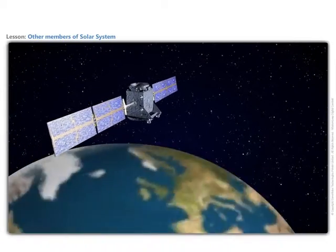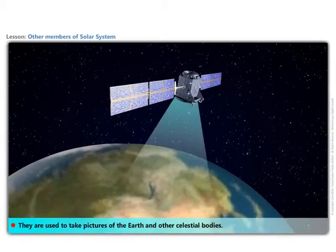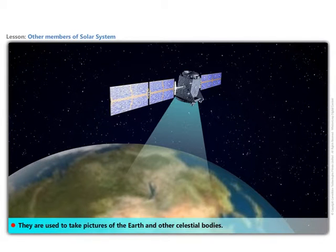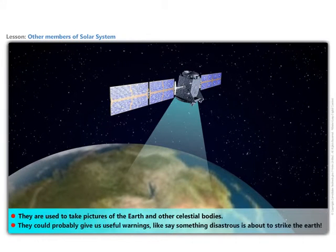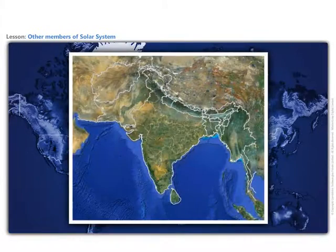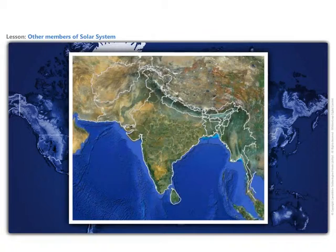Artificial satellites have many practical applications. They're used to take pictures of the Earth and other celestial bodies. They could probably give us useful warnings, like say something disastrous is about to strike the Earth. India has built and launched several artificial satellites.